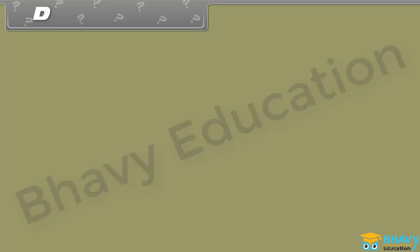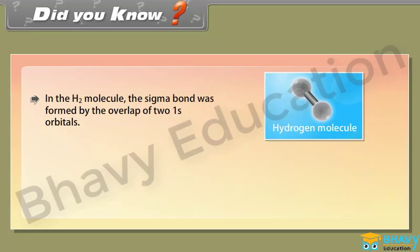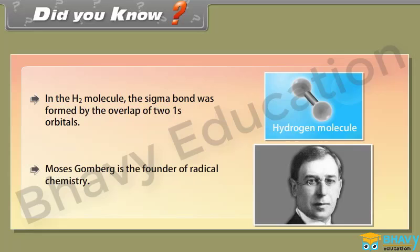Did you know? In the hydrogen molecule, the sigma bond was formed by the overlap of two 1s orbitals. Moses Gomberg is the founder of radical chemistry.